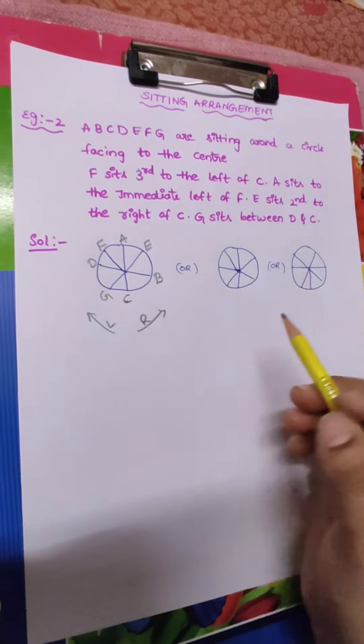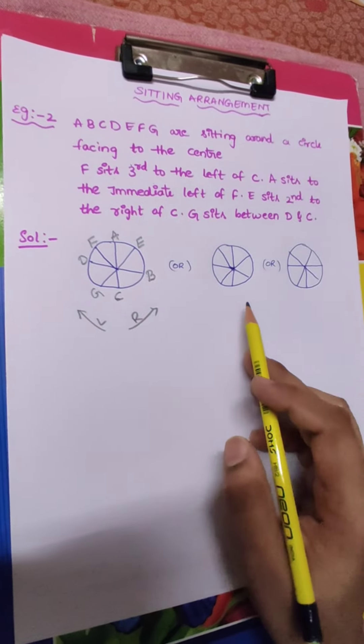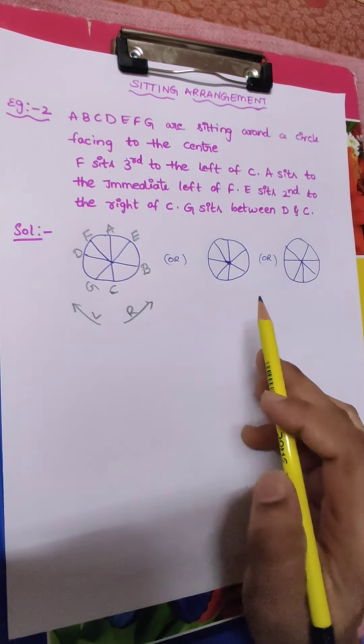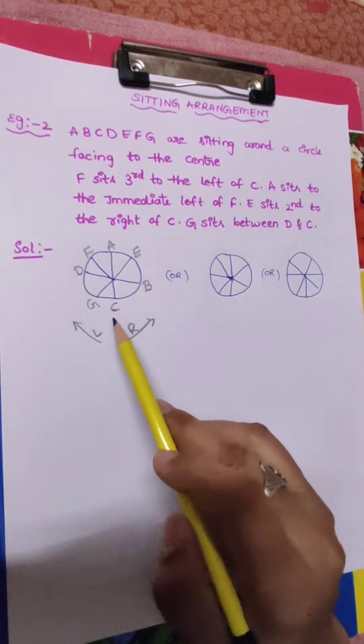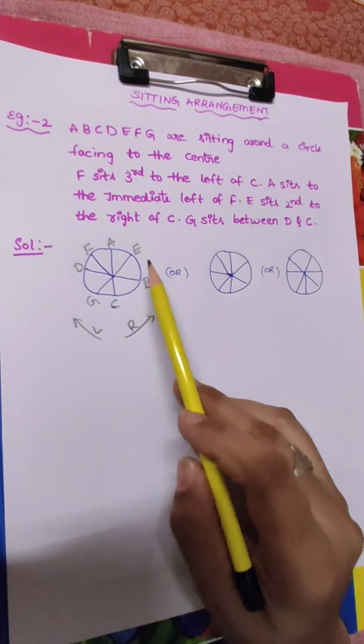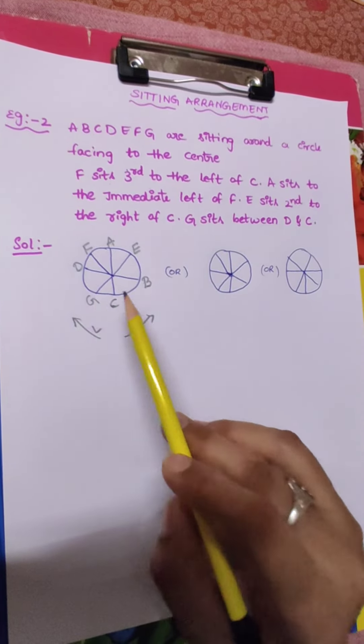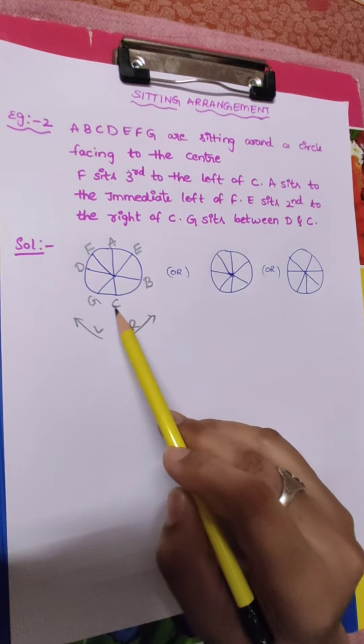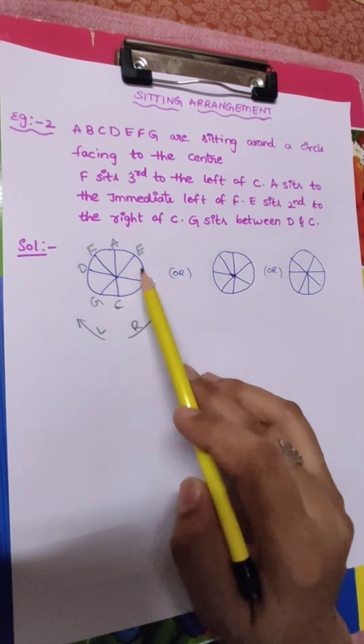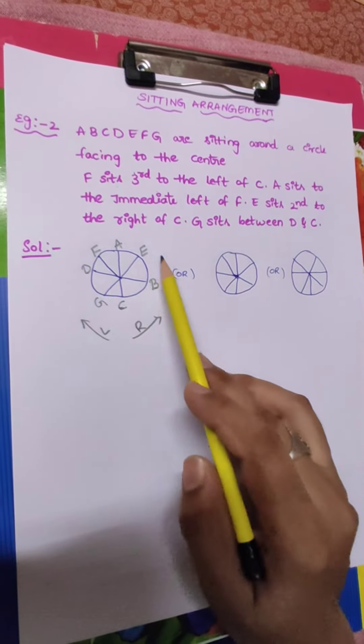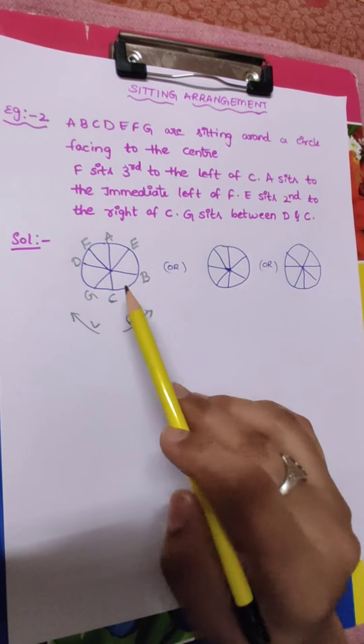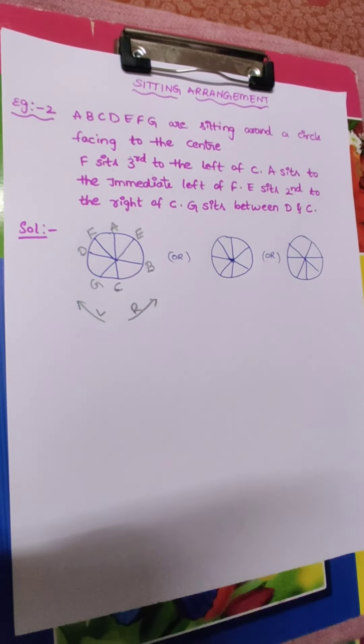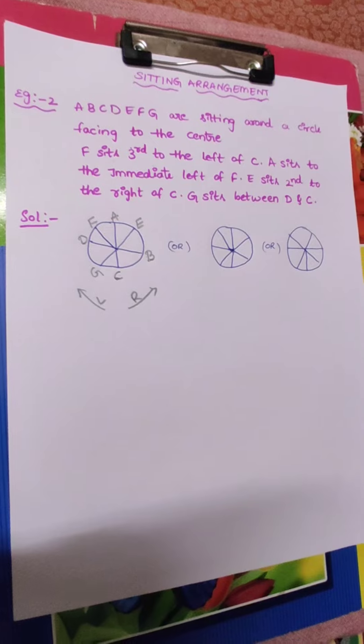Whenever odd number, anything we can draw. Even number only we have to draw perfect. So here the answer is C, B, E, A, F, D, G. Here starting, I took C's position here, but you can take anywhere. But sequence has to come proper. Remaining is ok. So try second one. Thank you.